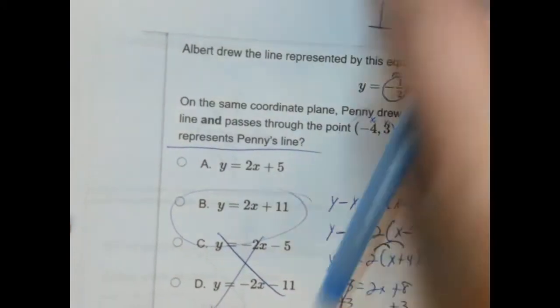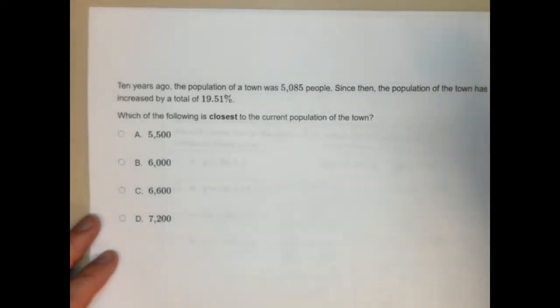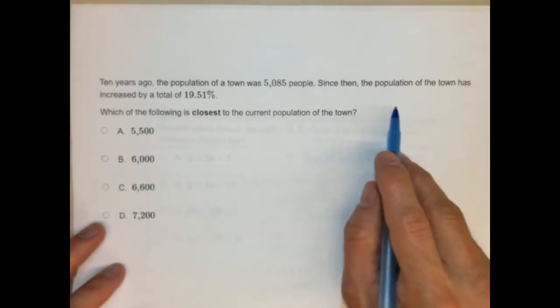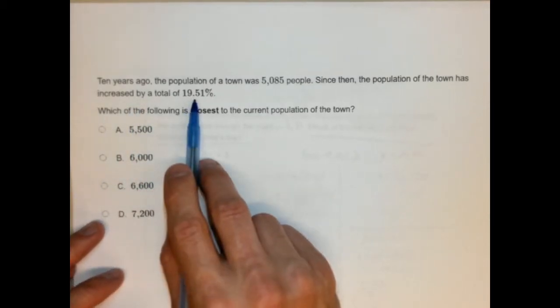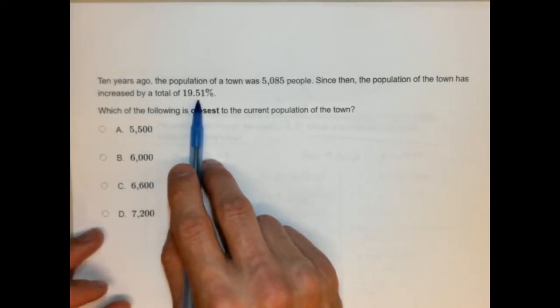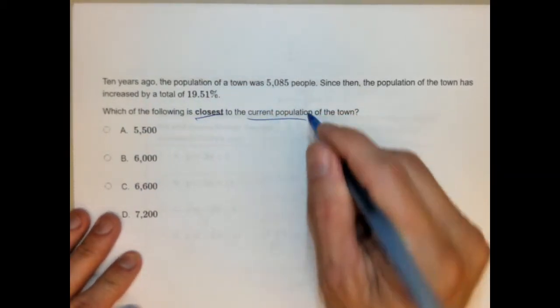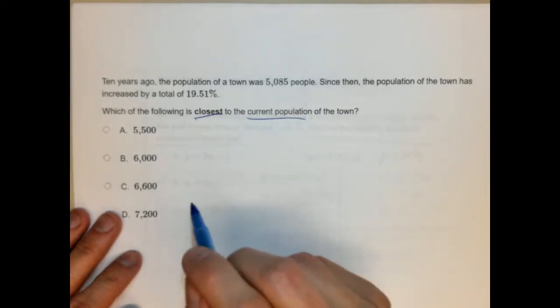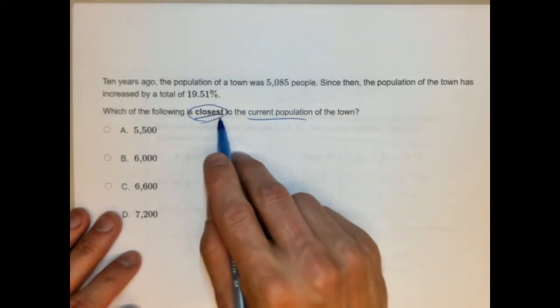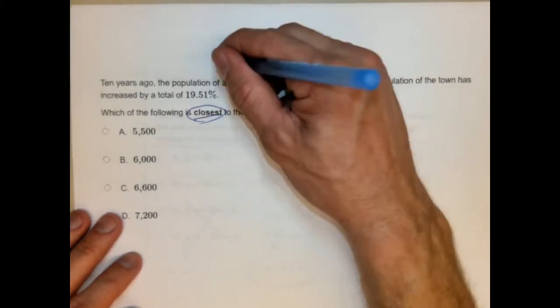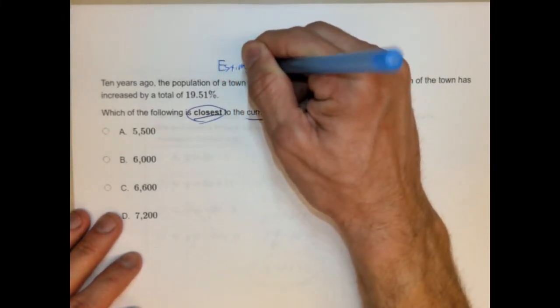And we got the last one, which is 13, which was actually not in the PDF originally. I apologize. I had to go back and reprint that. So here we go. So 10 years ago, the population of a town was 5,085 people. Since then, the population of the town has increased by a total of 19.51%. Which of the following is closest to the current population of the town? So we're looking for something that's closest to the current population. The phrase closest to means we're working on an estimation problem. We're going to estimate here.